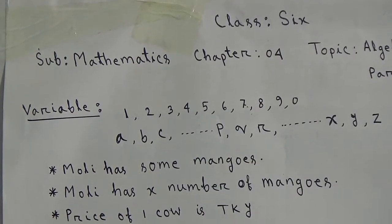This x is called variable in algebra. Here another sentence is given: price of 1 cow is tk y. Here y is also a variable. Now students, I want to discuss about another thing.